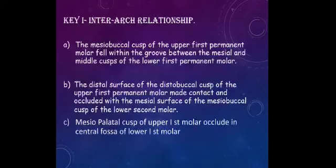First key is inter-arch molar relationship. The first point given by Angle: the mesiobuccal cusp of the upper maxillary first permanent molar falls within the groove between the mesial and middle cusp of the lower first permanent molar. Second point: the distal surface of the distobuccal cusp of the upper permanent first molar may contact with the mesial marginal ridge of the mesiobuccal cusp of the lower second molar. Third: the mesiopalatal cusp of the upper first molar should occlude in the central fossa of the first molar.